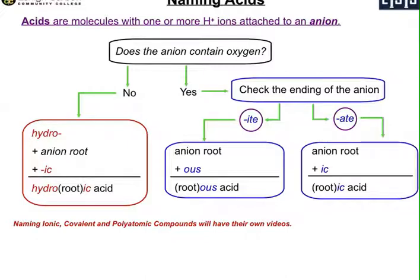Your first step is: does the anion contain oxygen? If it doesn't, you go straight to naming. You start out with the letters hydro, then add the anion root name and finish it off with IC. So it's hydro plus the root and then IC, and then you add the word acid. We'll have examples on the next page.